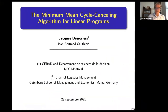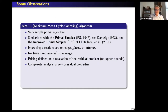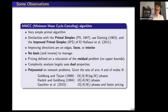Let's start the presentation on the minimum mean cycle cancelling algorithm, which is known since 1989. It was designed for network problems. It is a very simple primal algorithm. It has similarities with the primal simplex and the improved primal simplex designed by Ismael and François and co-authors. MMCC has improving directions on edges, faces, and sometimes interior. There's no basis, no inverse to manage, and the pricing is defined on the relaxation of the so-called residual problem.